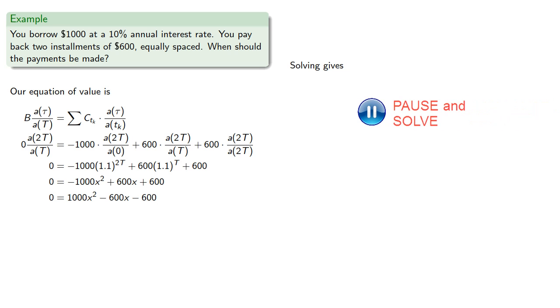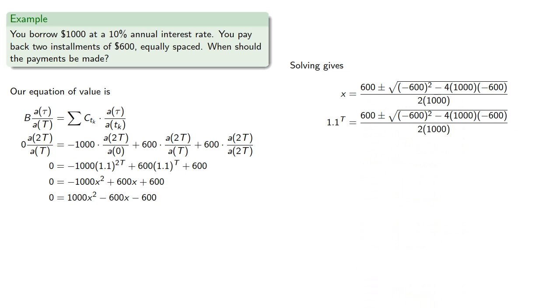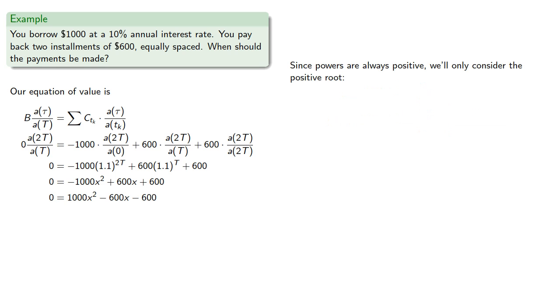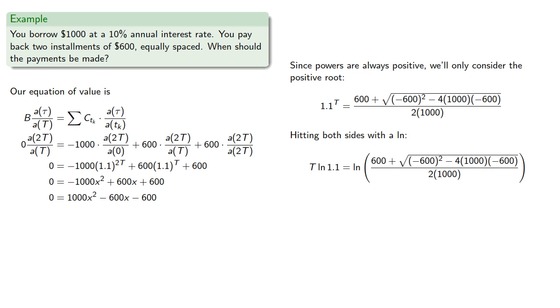And solve. Now remember that we're actually solving for 1.1 to the power of t, and since powers are always positive, we'll only consider the positive root of our quadratic equation. And that turns out to be the time when we add the square root. So hitting both sides with the log, and solving, gives us t approximately 1.29 years.